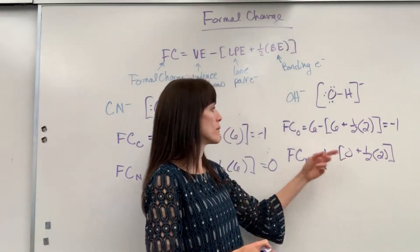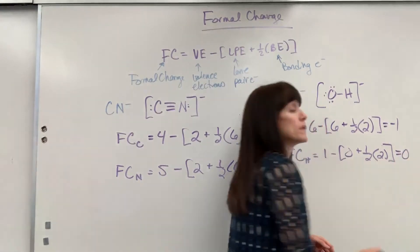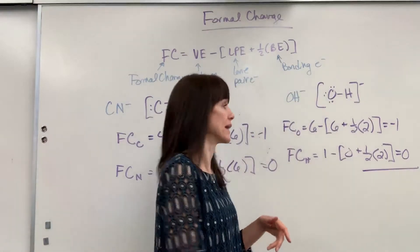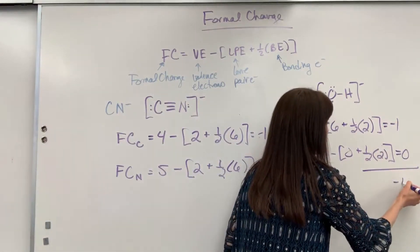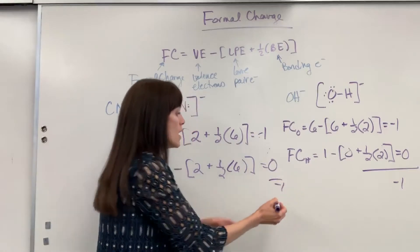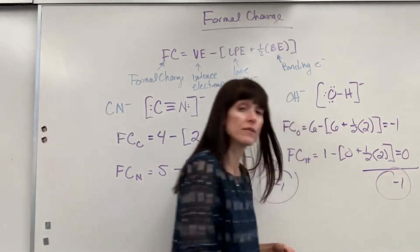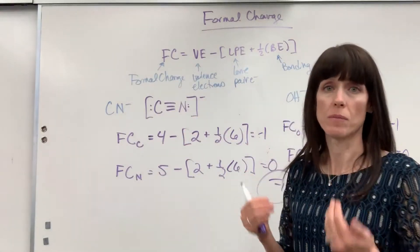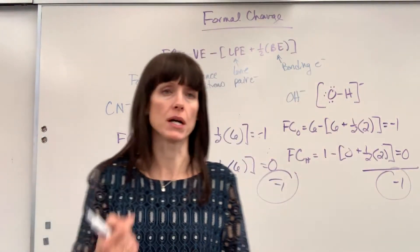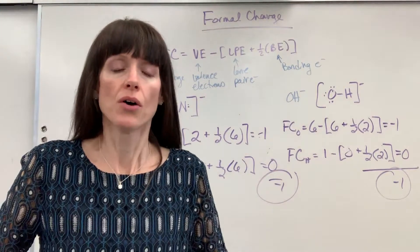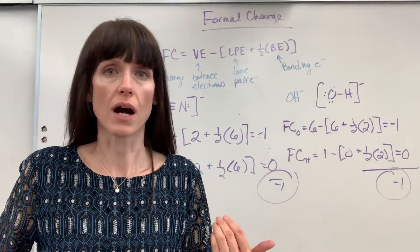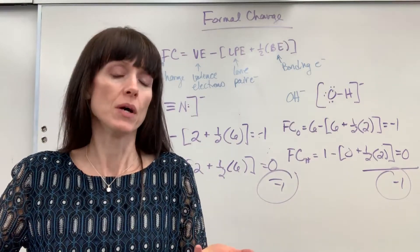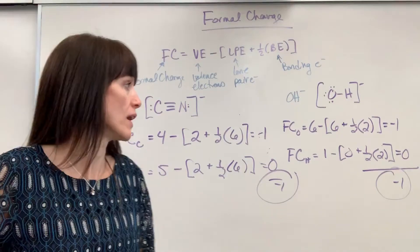Formal charge for hydrogen: one valence electron, minus zero lone pair electrons, plus one half times two bonding electrons. One half times two is one; one plus zero is one; one minus one is zero. A side note: when you add up formal charges from all atoms, minus one plus zero equals minus one — the sum of all formal charges equals the net charge on the molecule or polyatomic ion. For neutral atoms with no charge, all formal charges sum to zero.